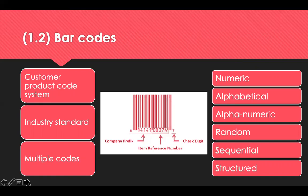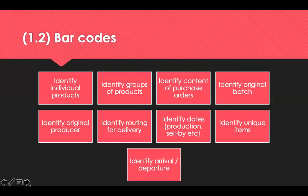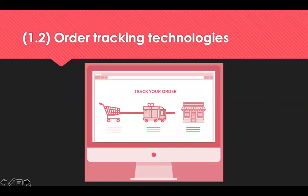Beyond identification, barcodes eliminate human error, reduce the need for training on descriptions and provide a versatile identification system for rapid, accurate data and improved decision making. The benefits include identifying individual products, groups, content of purchase orders, batch numbers, the producer and the routing for delivery. Some even identify dates of production and sell-by dates, unique items, and arrival and departure. An order tracking system tracks goods from the moment an order is placed to when they are physically delivered to the destination.